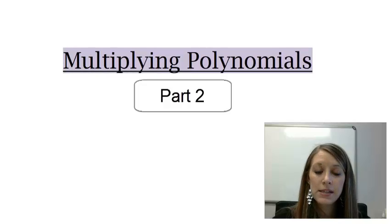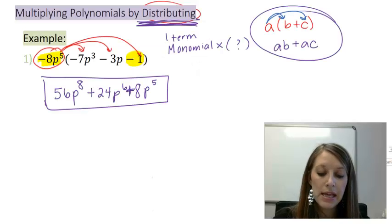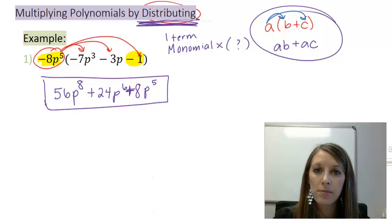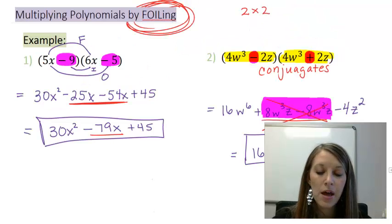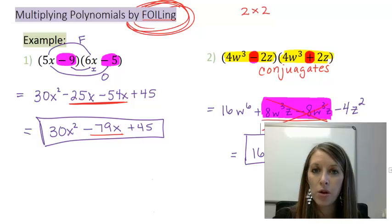We've seen an example of distribution when it is a monomial times something, or a one-term polynomial times anything else. We distribute that one-term polynomial through. We've seen examples of foiling when we are multiplying two binomials, or a two-term times two-term polynomial. We follow the acronym first, outside, inside, last.